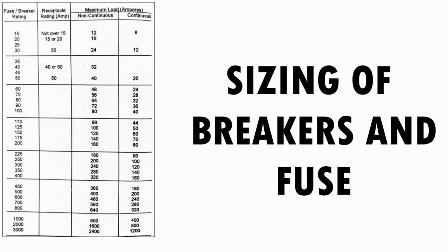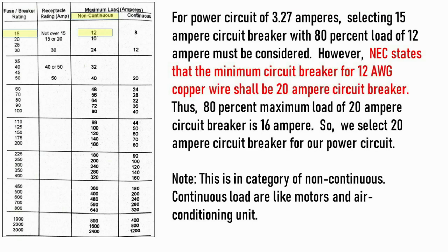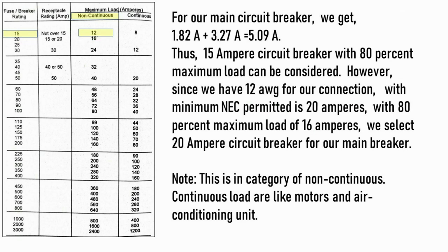For selection of circuit breakers or fuses for each circuit: for the lighting circuit with 80% maximum load, a 15-ampere circuit breaker can be selected — it will be safe for 12 amperes against 1.82 amperes. For the power circuit of 3.27 amperes, selecting a 15-ampere circuit breaker with 80% load of 12 amperes must be considered. However, NEC states that the minimum circuit breaker for 12 AWG copper wire shall be a 20-ampere circuit breaker. Thus, 80% maximum load of the 20-ampere circuit breaker is 16 amperes, so we select a 20-ampere circuit breaker for our power circuit.